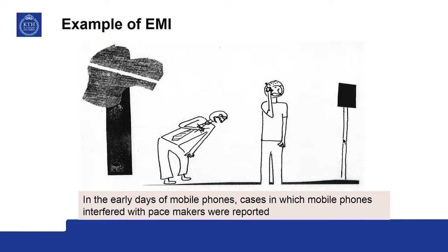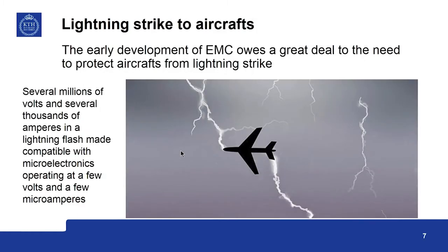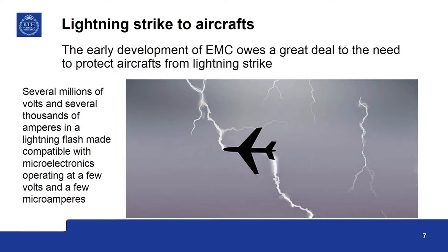Sometimes in the early days of pacemakers there were more worrying forms of interference. For example, when someone was talking over early versions of mobile telephones, it interfered with pacemakers of patients — that is a more serious form. Any of you travelling by airplane might have experienced lightning strikes to an airplane while landing or taking off. This is very common nowadays, but in the early days of aviation history it was a great concern. In fact, the branch of EMC owes a great deal to the need for protection of airplanes from lightning strikes.